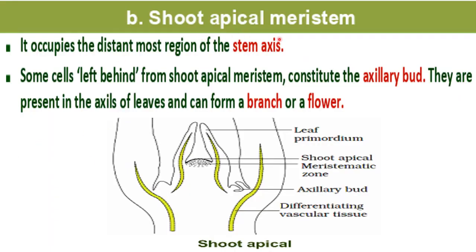Next is shoot apical meristem. Shoot apical meristem occupies the distal most region of the stem axis, that is, at the tip of the stem. Some cells left behind from shoot apical meristem constitute the axillary bud. This is the shoot part, this is the tip of the shoot and the growing portion which is making the leaf. When this part is growing, the part left behind makes the axillary bud.